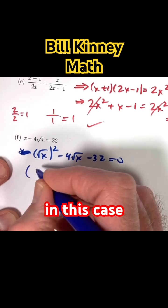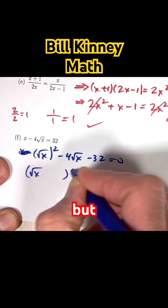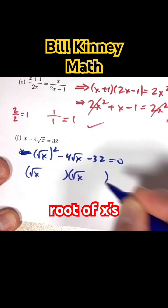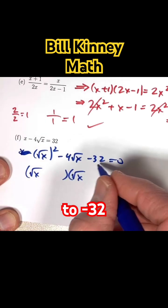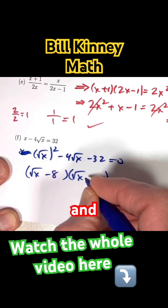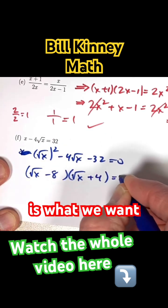And in fact, you can factor in this case. But now you're going to have square root of x's in the first spots. We want to multiply to negative 32 and add to negative 4. A minus 8 and a plus 4 is what we want.